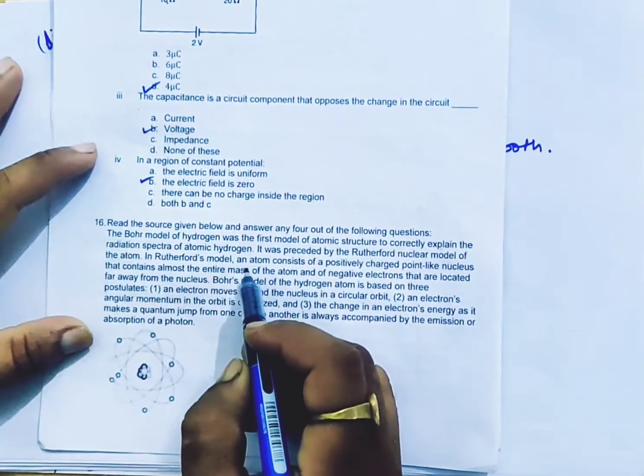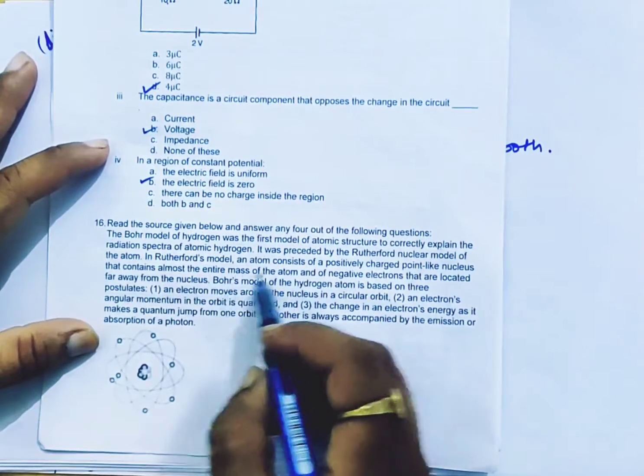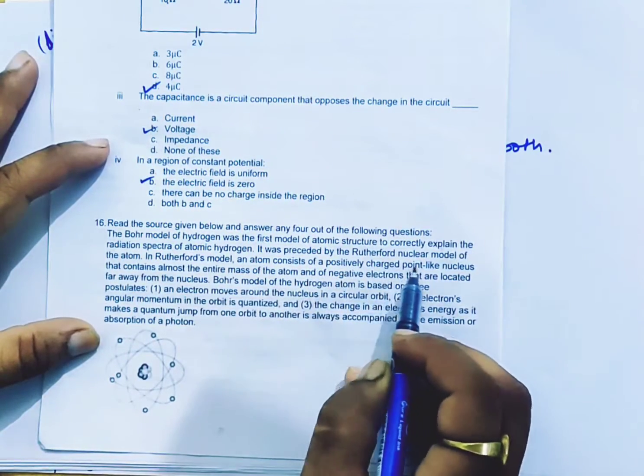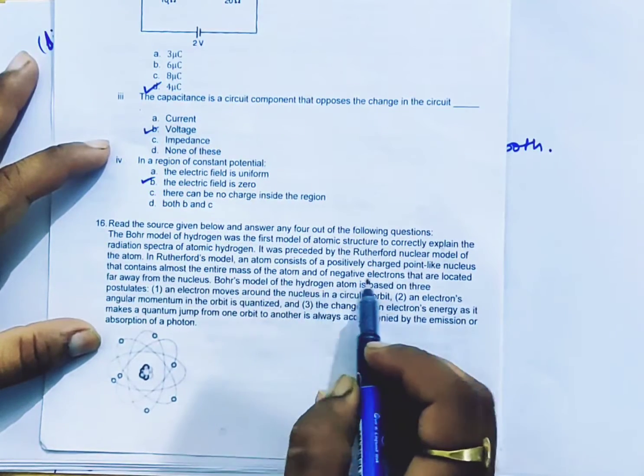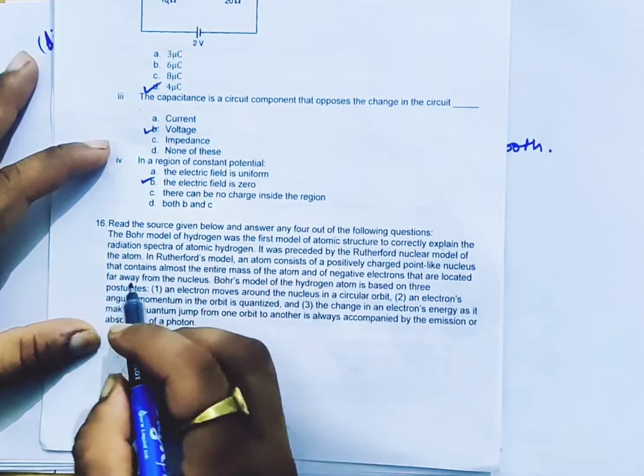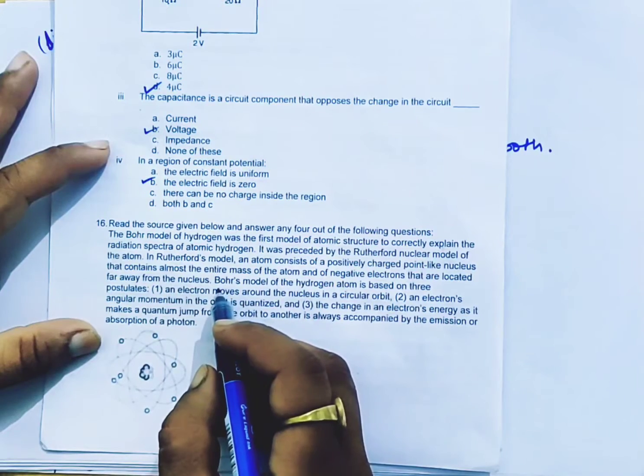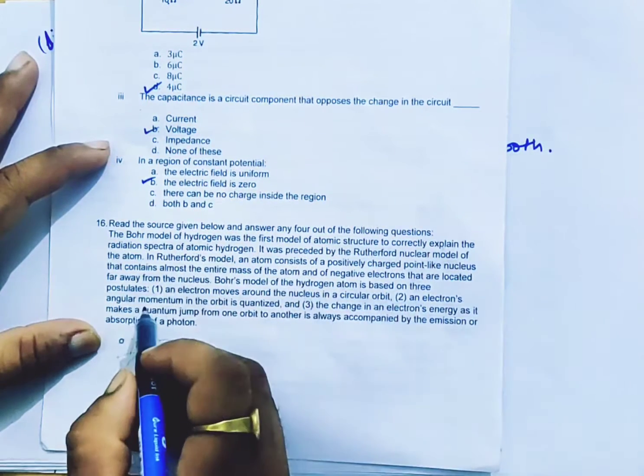In Rutherford's model, an atom consists of a positively charged point-like nucleus that contains almost the entire mass of the atom and negative electrons that are located far away from the nucleus. Bohr's model of hydrogen atom is based on three postulates.